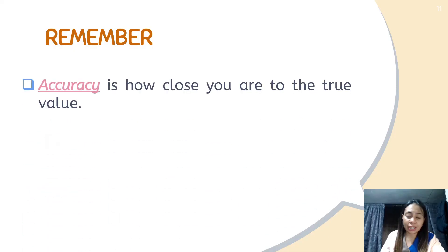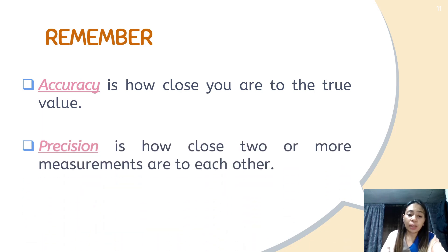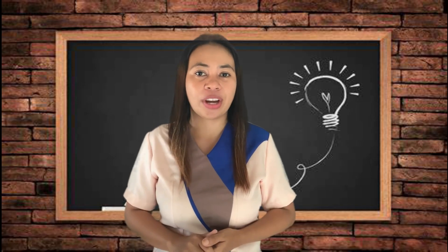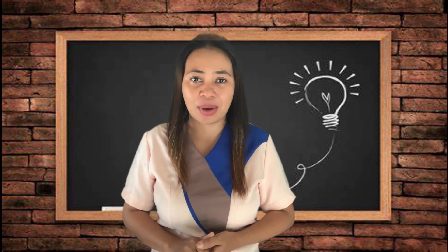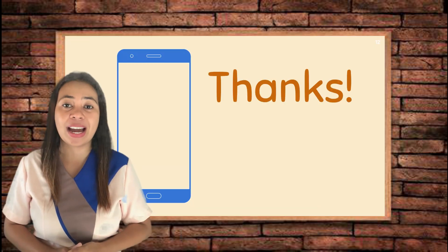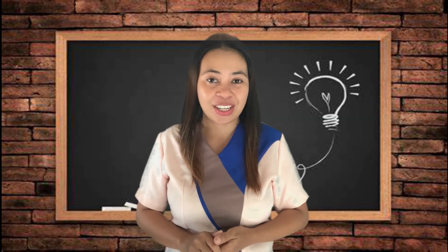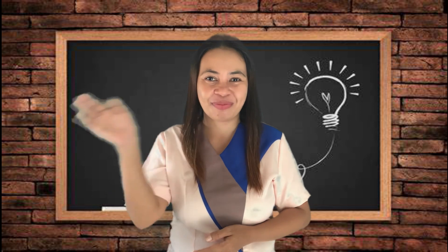Remember that accuracy is how close you are to the true value, while precision is how close two or more measurements are to each other. Thank you so much for your time, class. I hope you're able to tell now when a measurement is precise or accurate. If you have any questions, please don't hesitate to message me on my social media accounts shown on the screen. See you on my next video lesson. Until then, bye for now! Ciao!